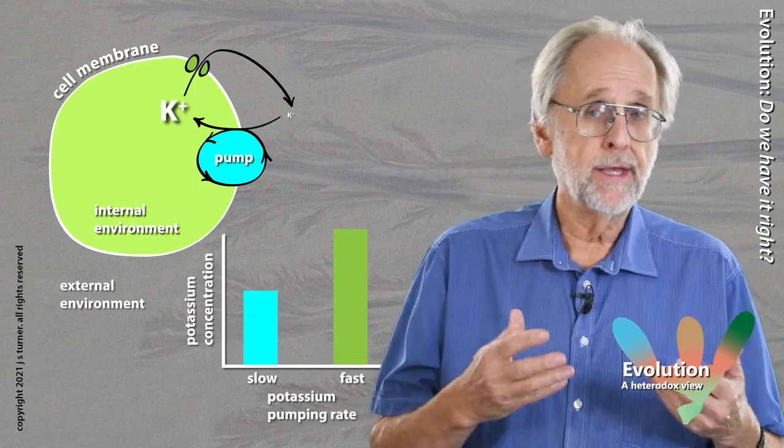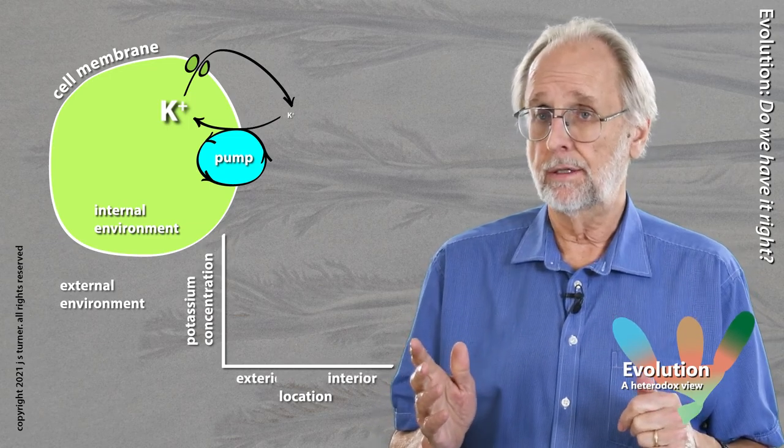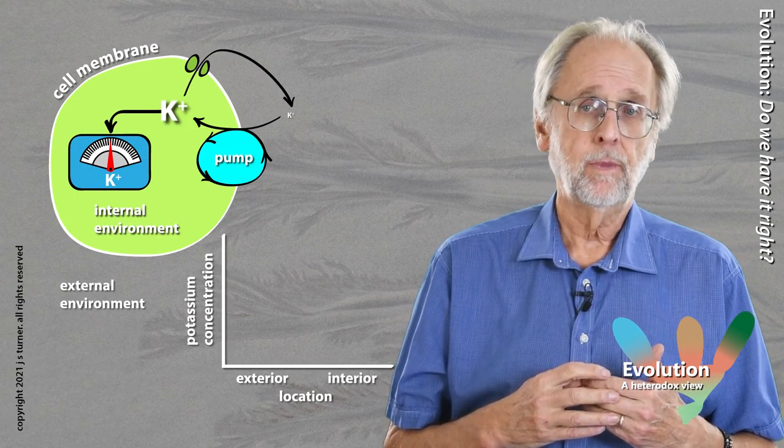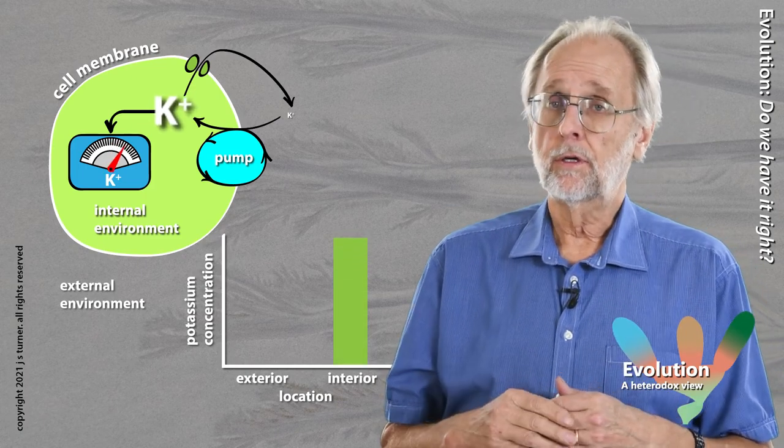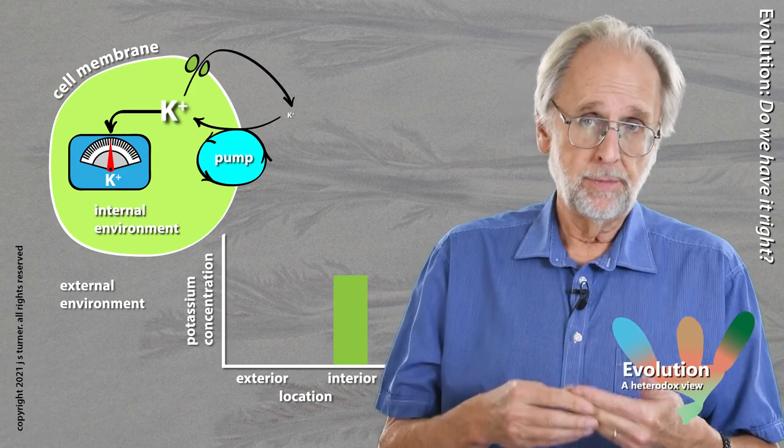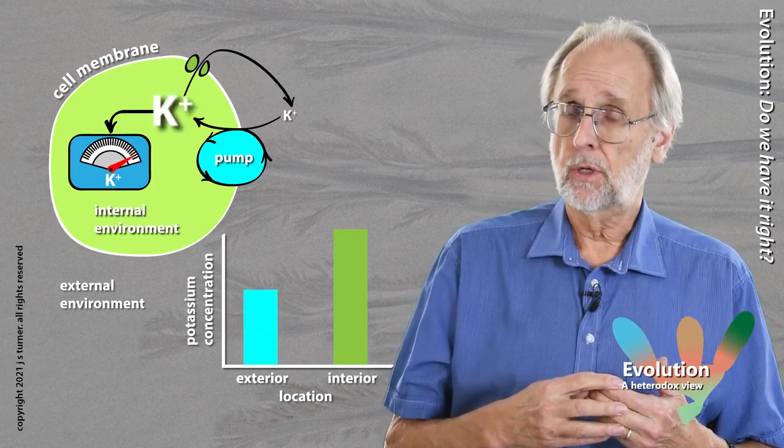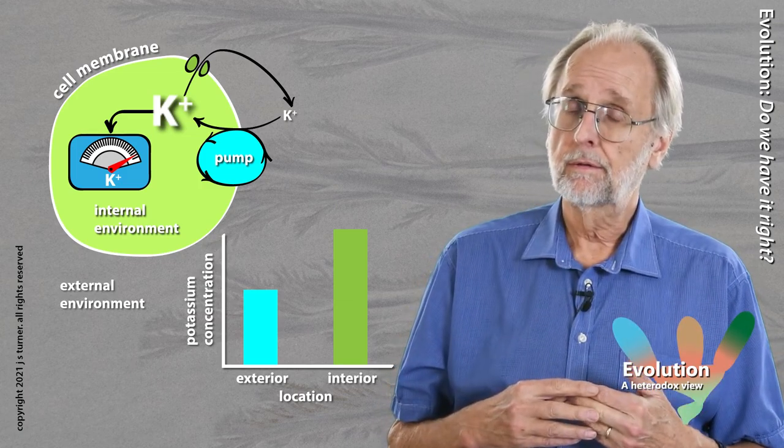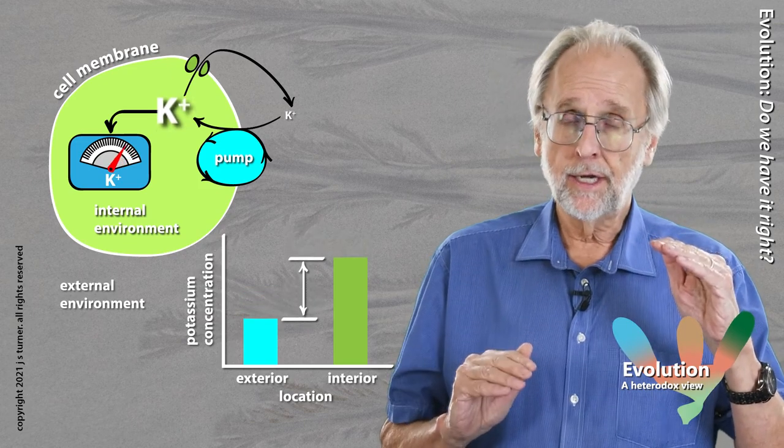Okay, let's now ramp things up a little bit. On our axis, we'll now look at potassium concentration inside the cell compared to outside the cell. And we'll also add a little meter which senses internal potassium concentration. When potassium concentration increases within the cell, the needle moves to the right. And when internal potassium concentrations decline, the needle moves to the left. Now, if we increase the pumping rate, potassium concentrations within the cell will increase. What happens if the exterior potassium concentration increases also? Well, the interior potassium concentration will increase along with it. What a particular pumping rate does is to maintain the difference of concentrations between the interior and exterior of the cell.